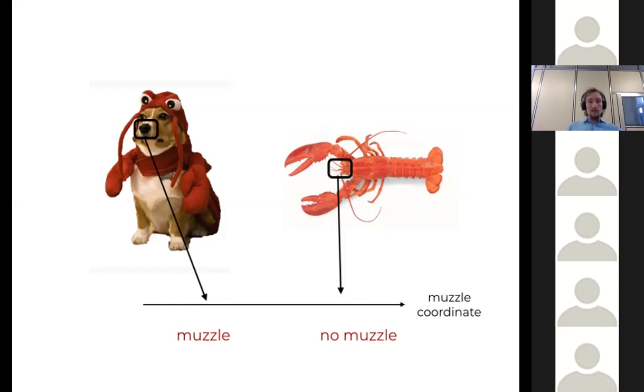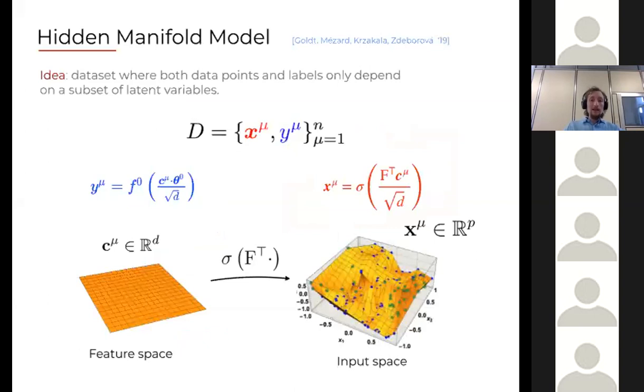If you think about my dog and lobster example, we know that we can classify dogs by just looking at whether they have muzzles or not. A lobster doesn't have a muzzle while a dog has. There exists a representation of this data which I would call the latent space representation where the muzzle is one of the coordinates. It's low dimensional, and whether my picture has a muzzle or not will spike on this coordinate, and I would be able to perfectly separate this easily by just looking at this space.